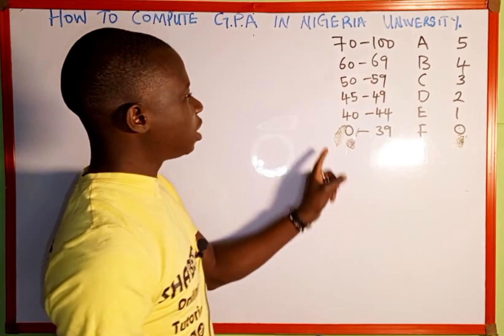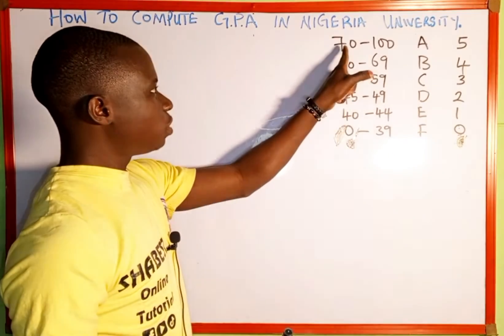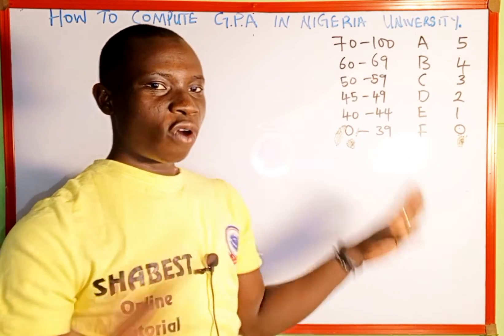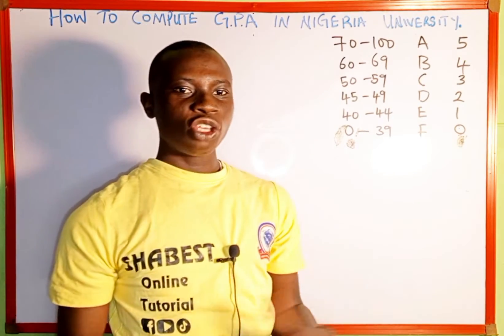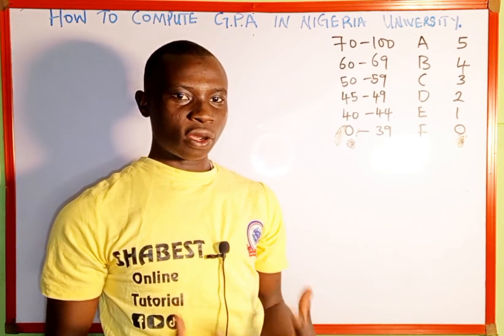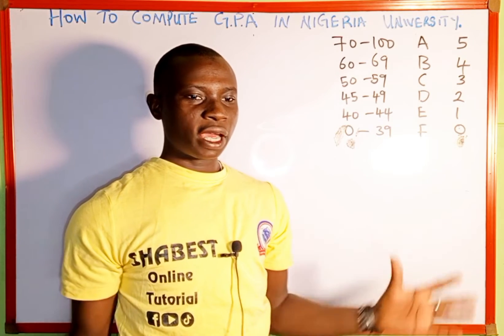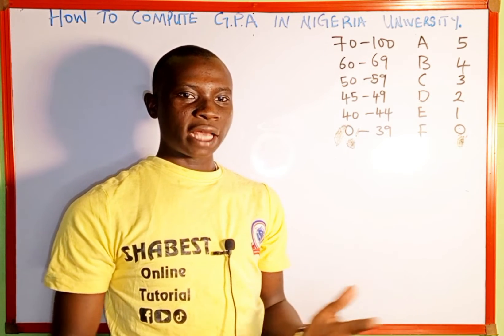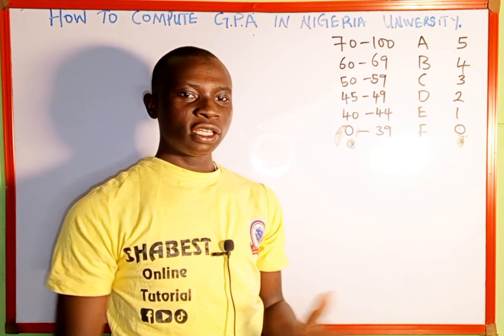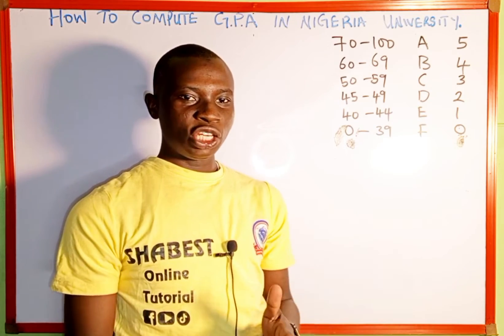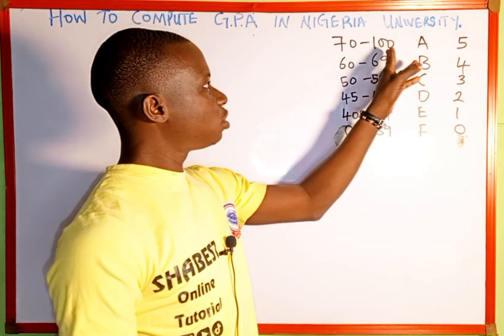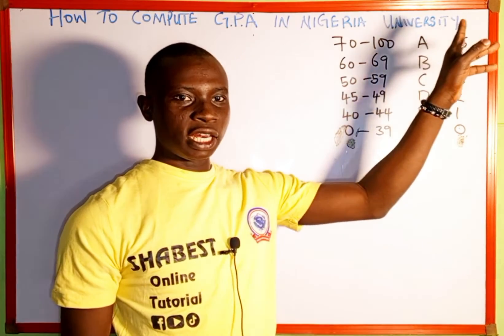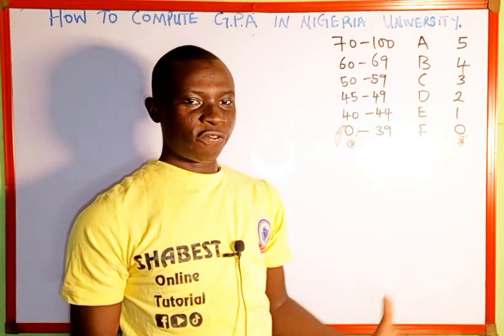The mark you are seeing here — if you score between 70 to 100, it is A. The mark is the sum of all the marks you obtain in a particular course. For instance, they calculate your tests, your assignments, your attendance, and your examination together, and if you score between 70 to 100, you get A in the course and the grade point is 5.